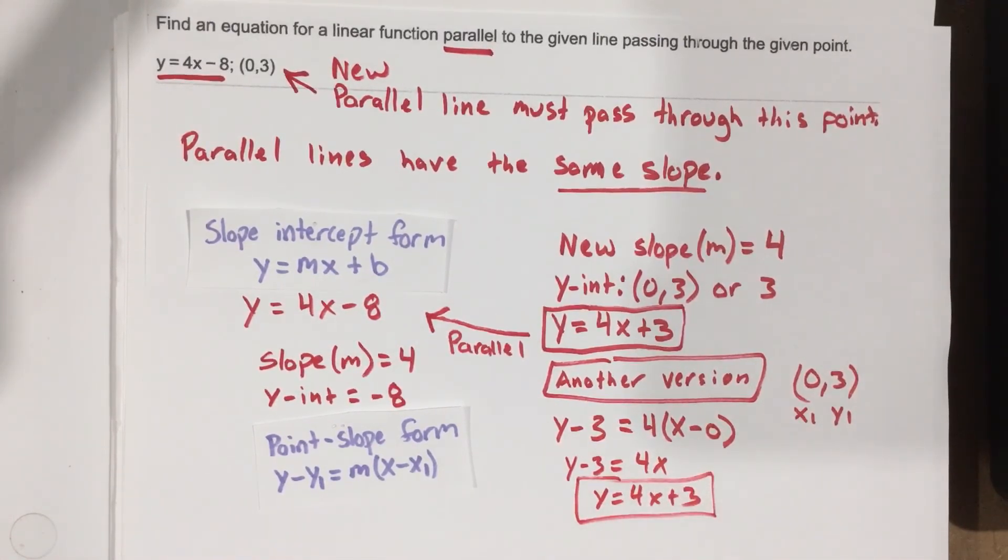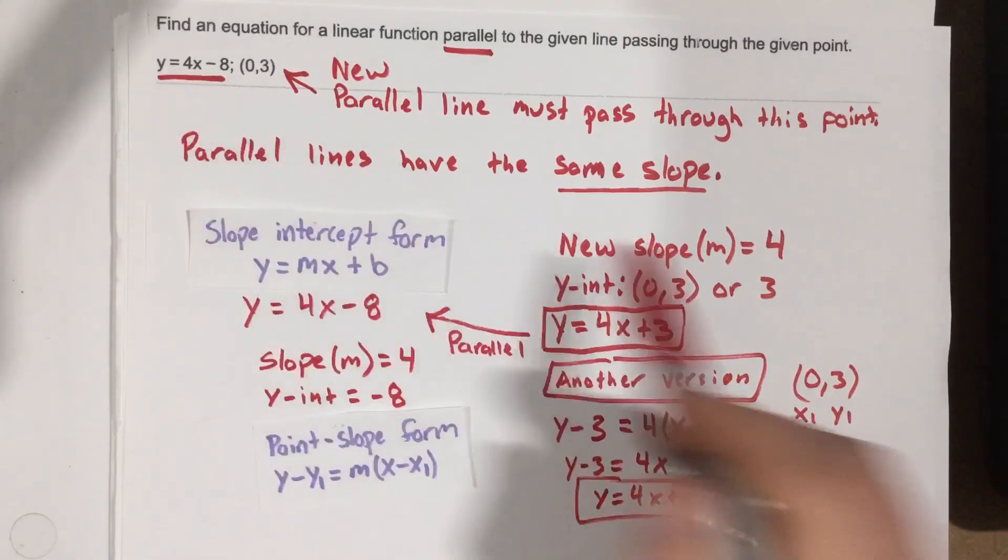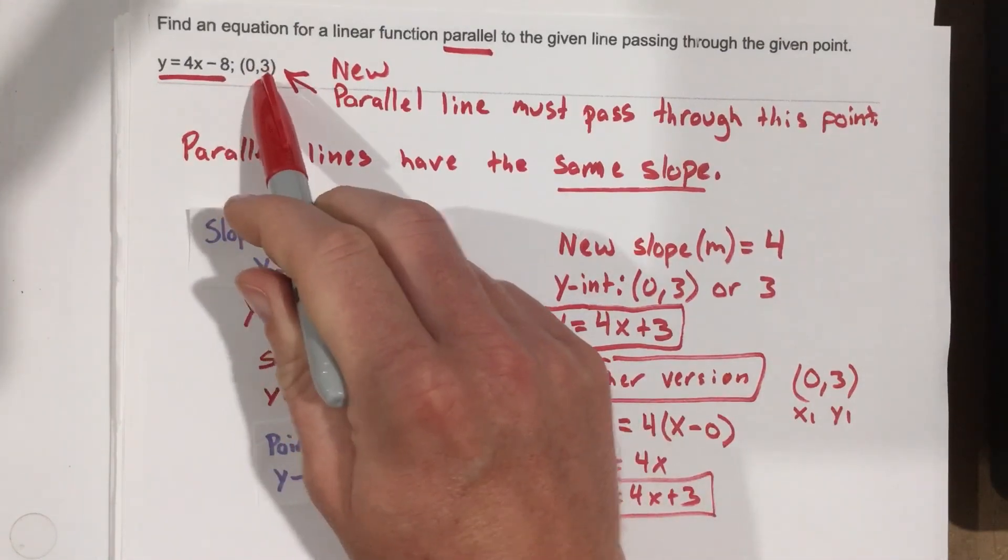So just another version of how to get that answer. So the key with this problem, identify that it's parallel, meaning they need the same slope. Once you have the slope, when you pull it out of the other equation, you can write the new line using that coordinate right there.